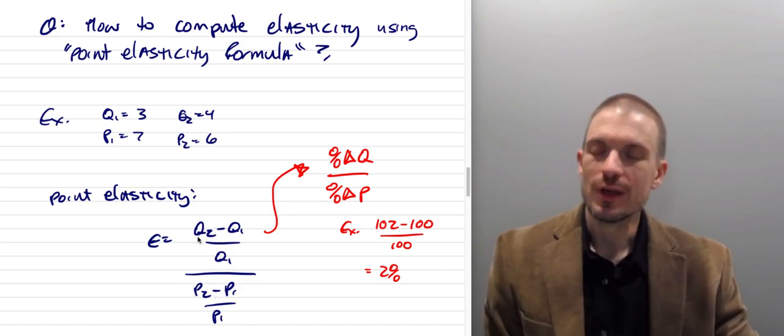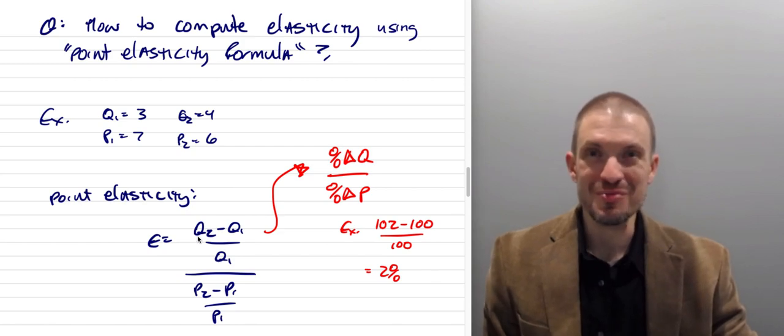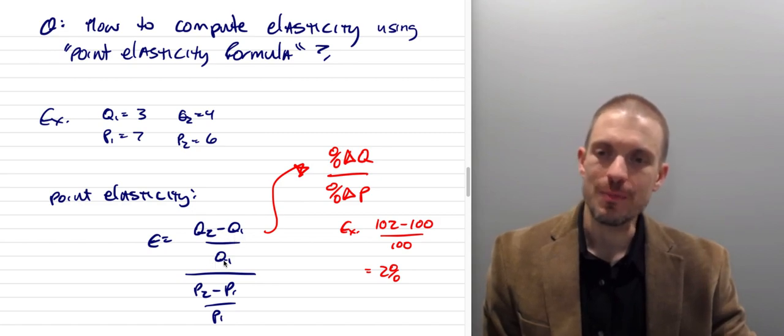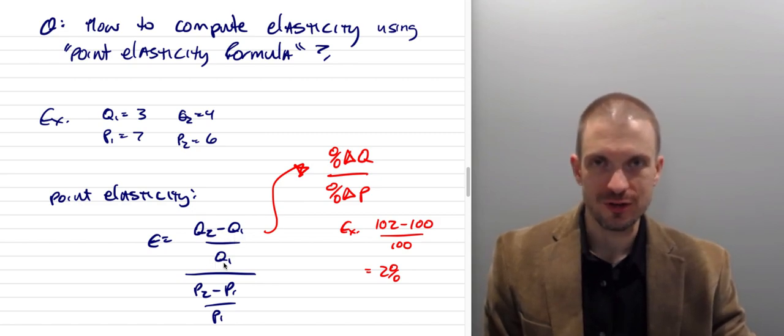The top, the numerator of the numerator, Q2 minus Q1, that's a change, right? So it's like new quantity minus old quantity. There's a change there, there's a difference. And when we divide it by the starting point, that makes it a percentage change.